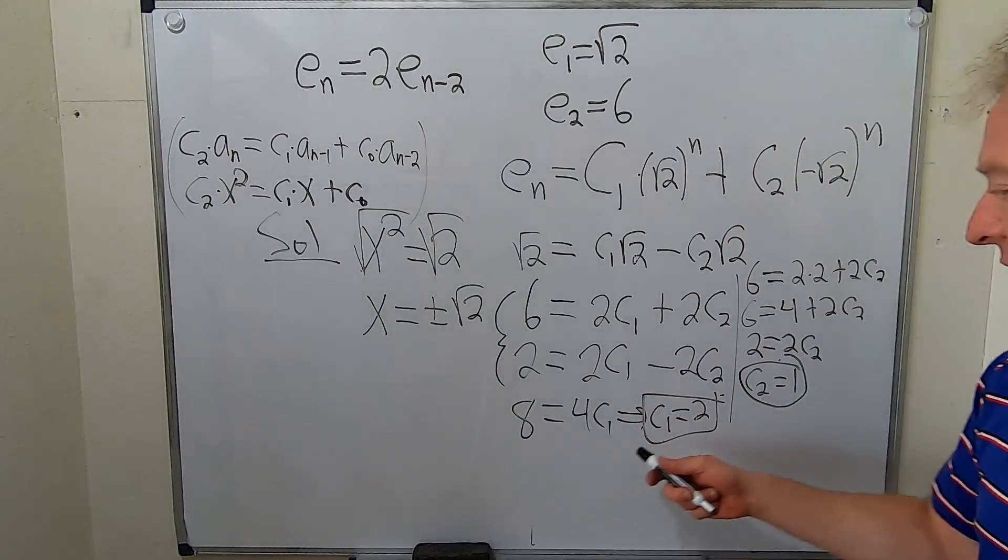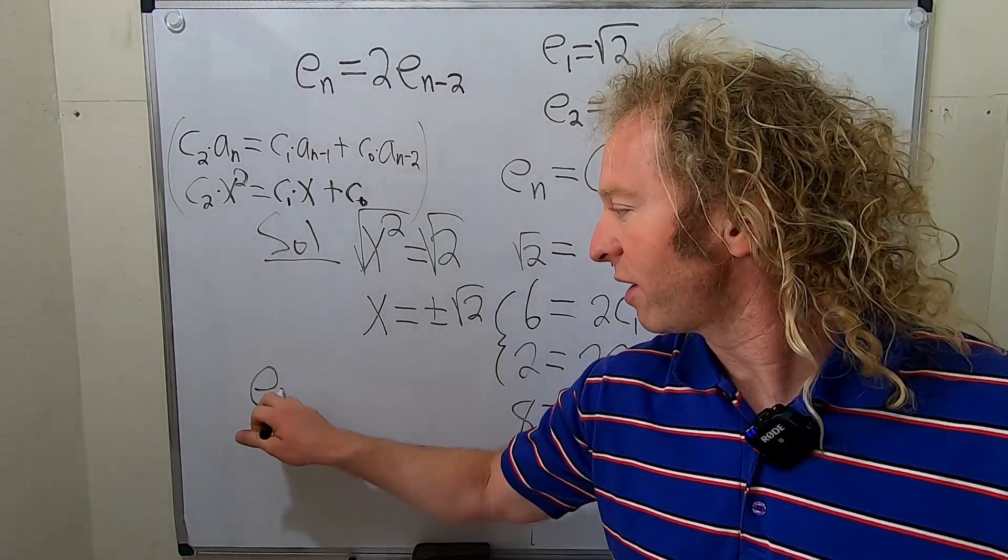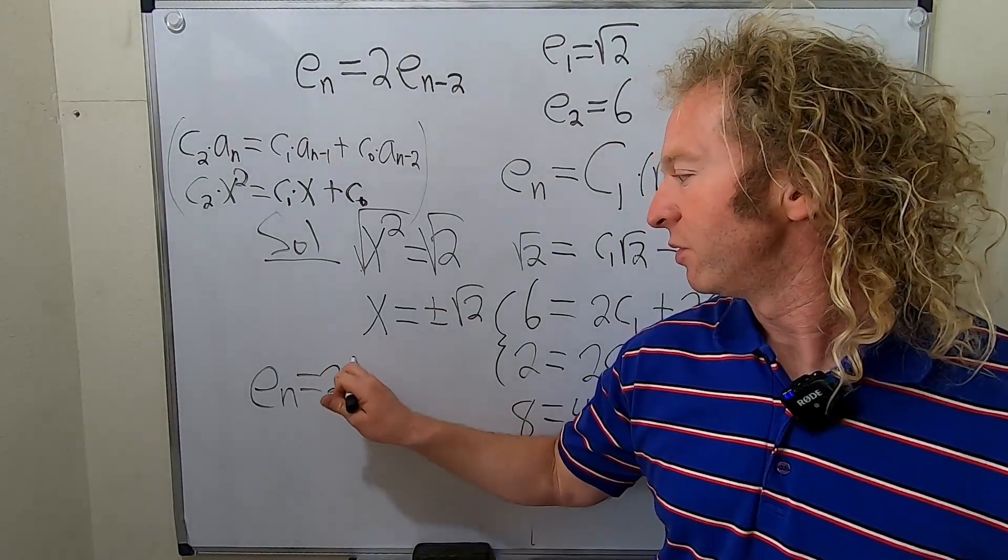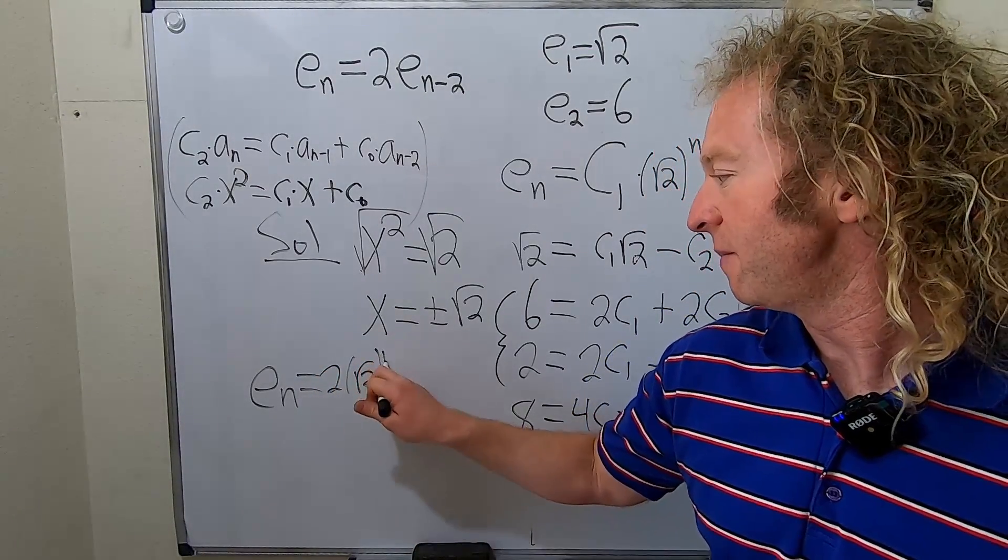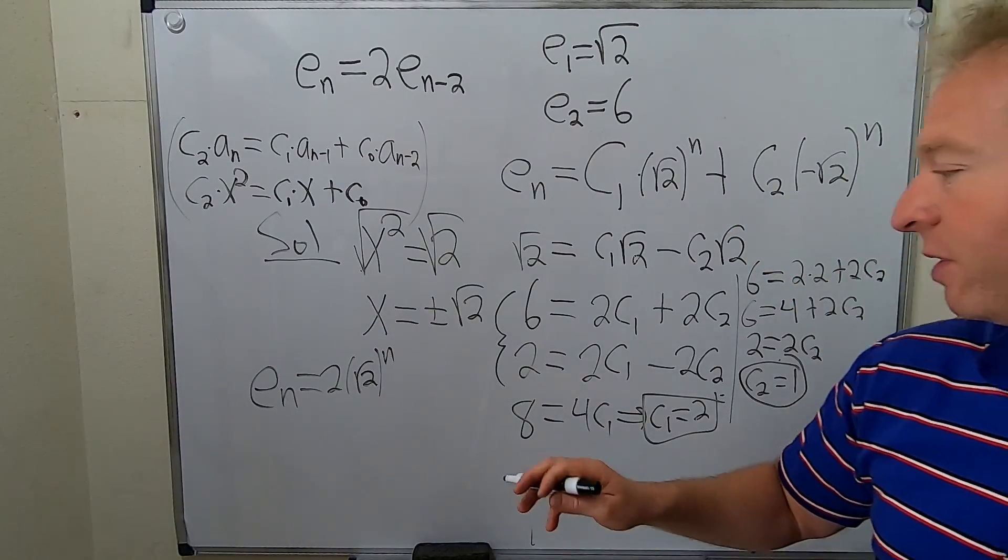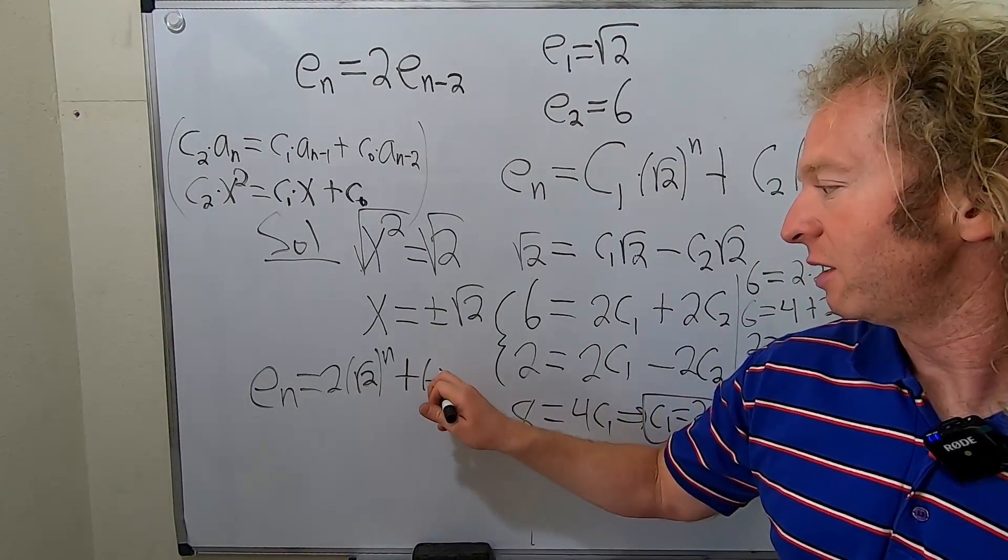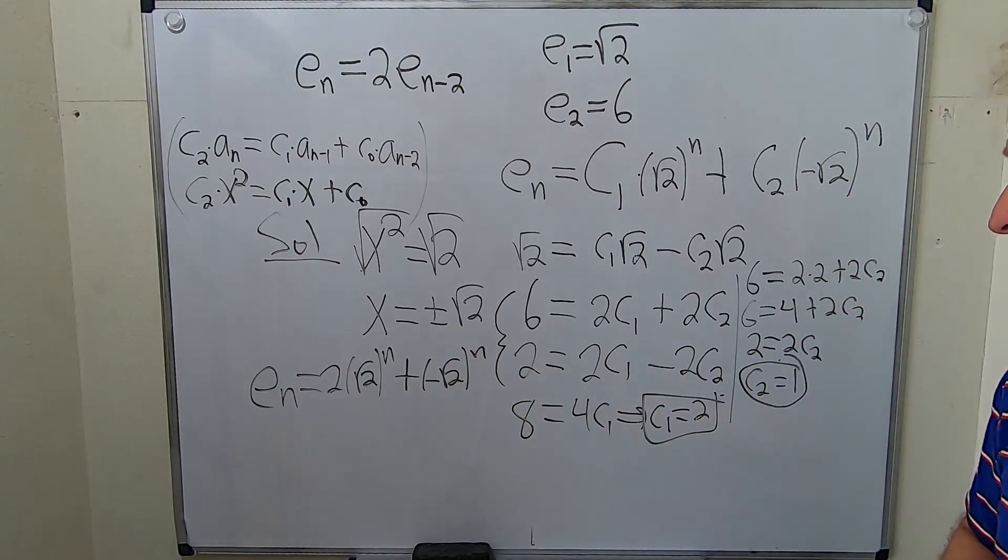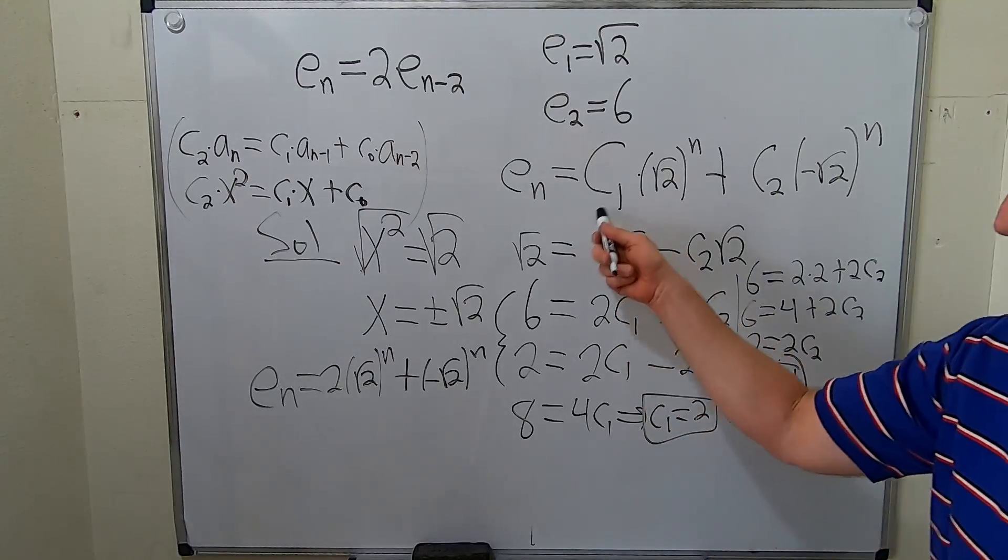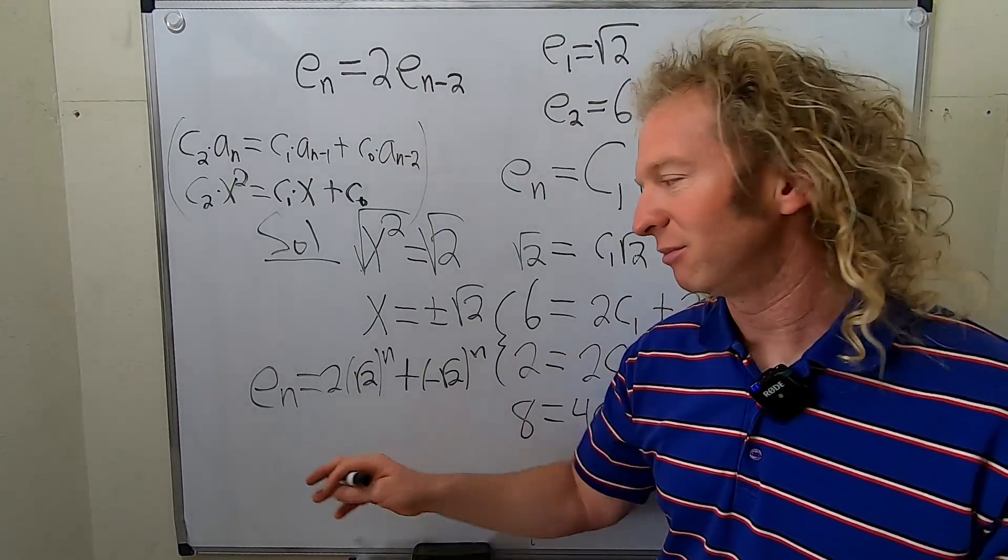Now we're done, right? Now we just take these constants and we plug them back into our answer. So e sub n. I'll write it over here so you can see it. c sub 1 is 2. So 2 square root of 2 to the n plus c2, which was 1. So it'll be plus negative square root of 2 to the n. Let me just check to make sure that's correct. So plug in the 2. Yep. And then plug in the 1. Yep. Looks good.